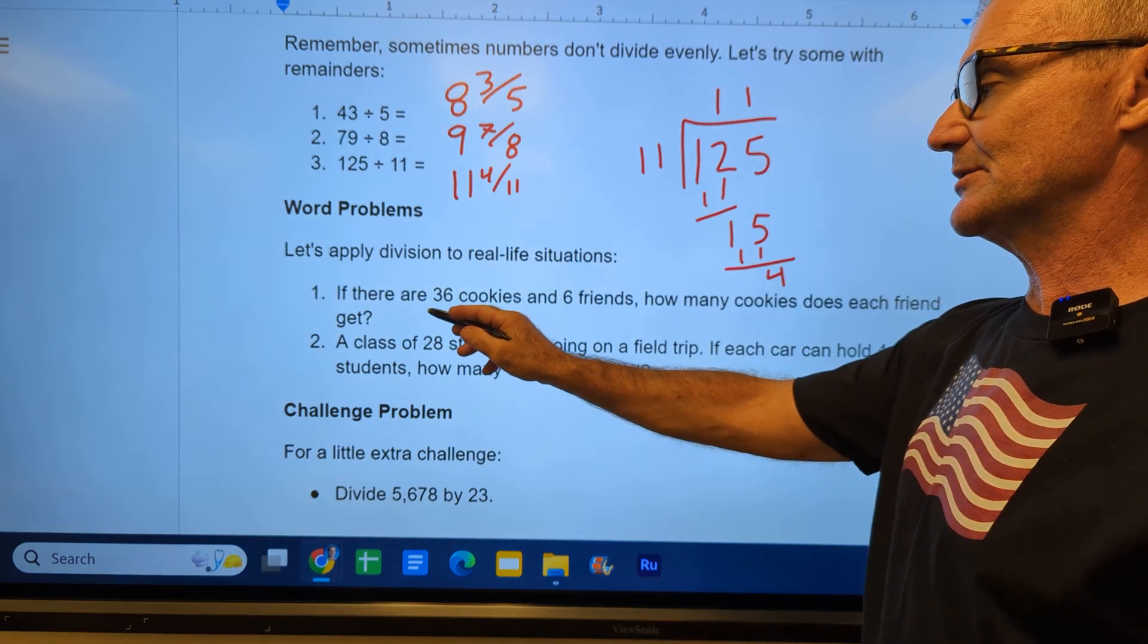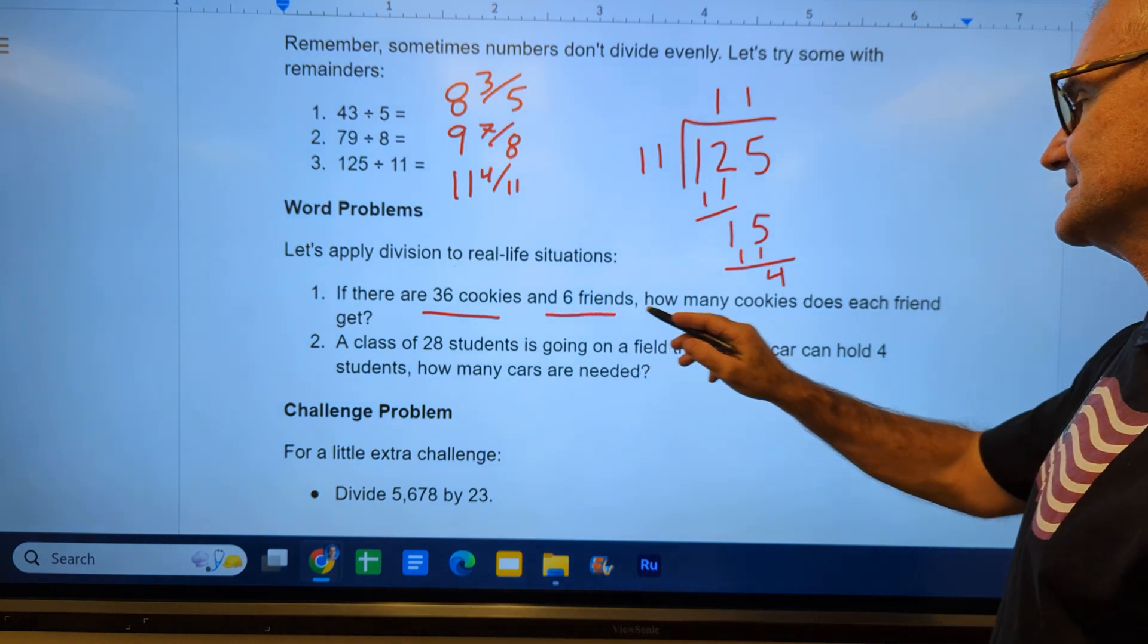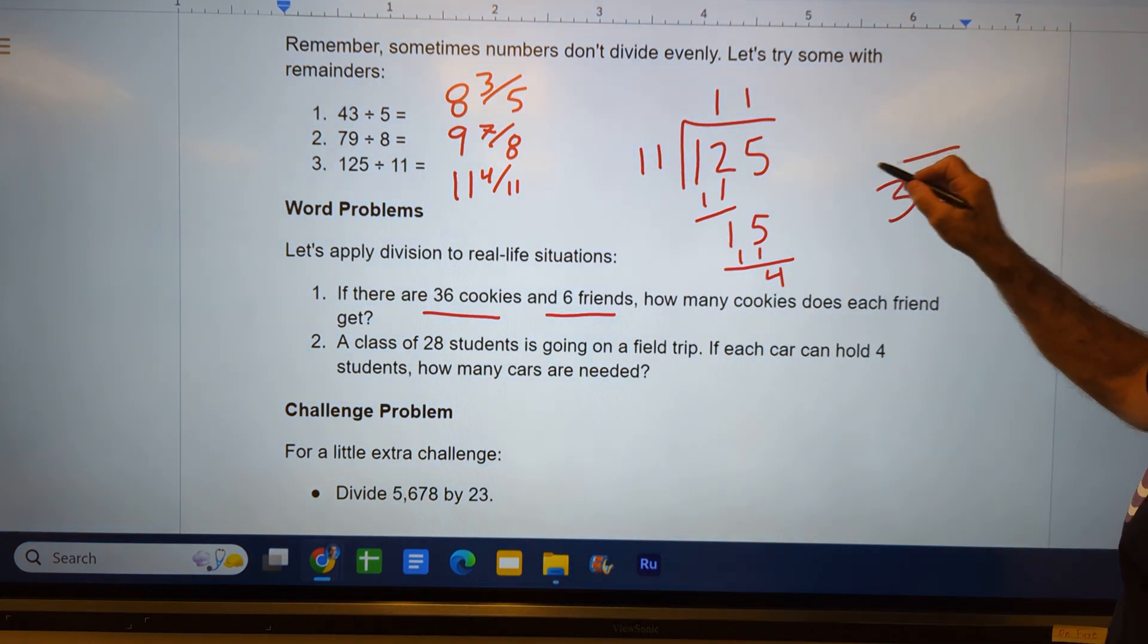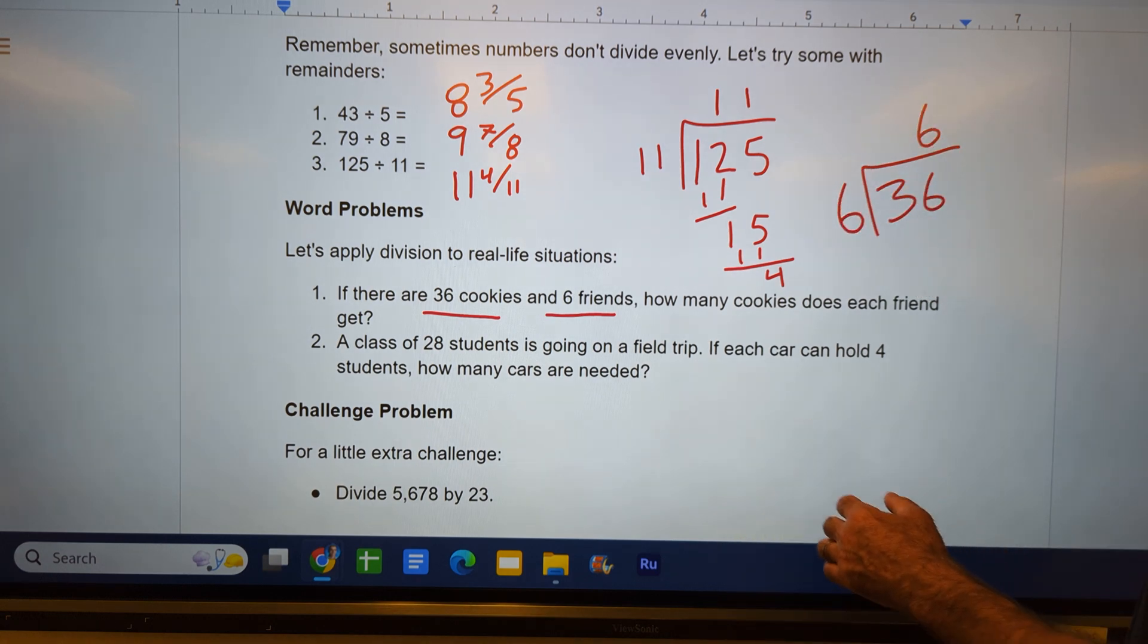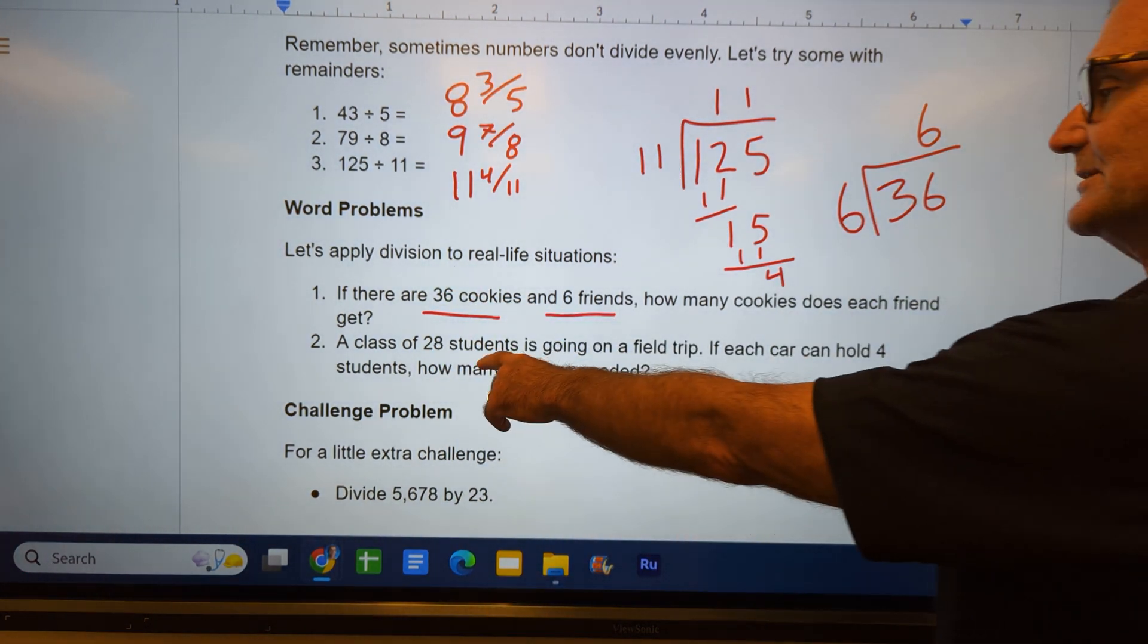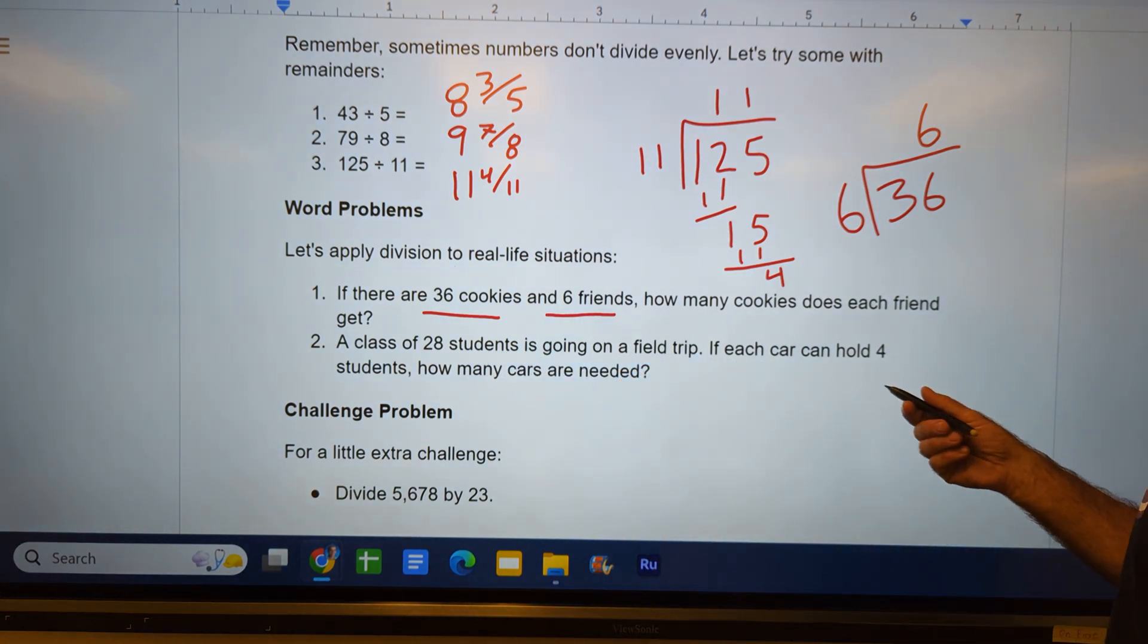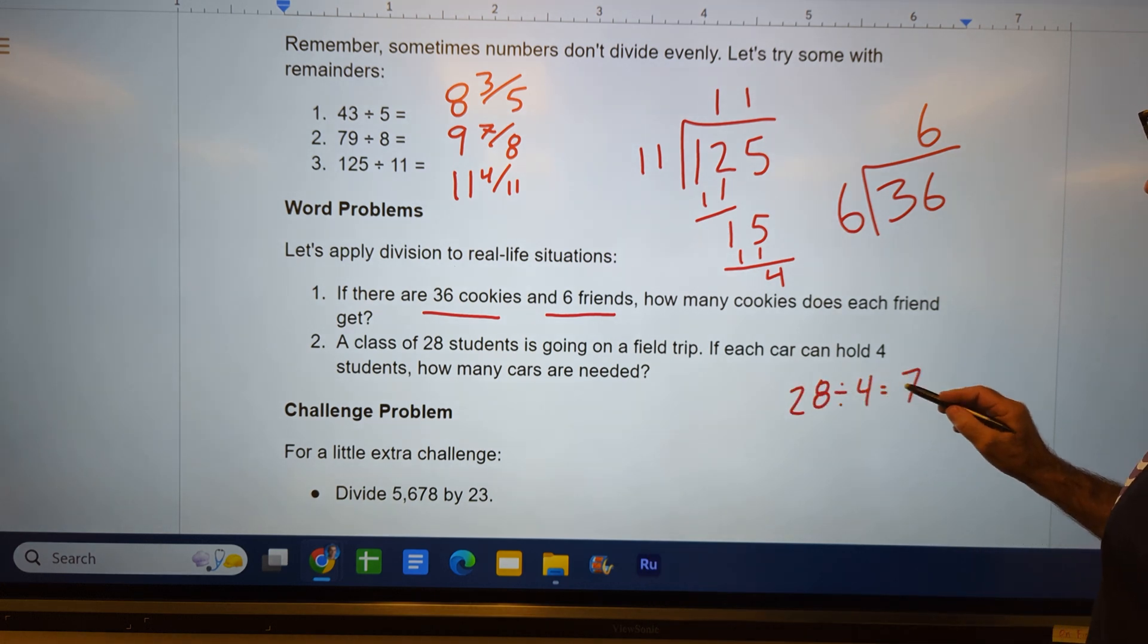So what I like to do on word problems is mark up the key numbers. There are 36 cookies and 6 friends. How many cookies does each friend get? So I have 36 cookies divided by the 6 friends. Each person gets 6 cookies. 6 friends times 6 cookies gives me a total of 36. 28 students are going on a field trip. Each car can hold 4. How many cars are needed? 28 divided by that 4 is equal to 7.